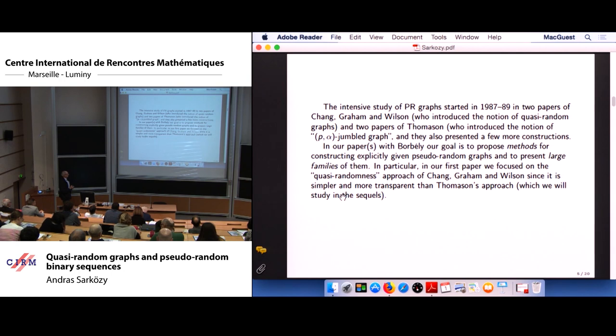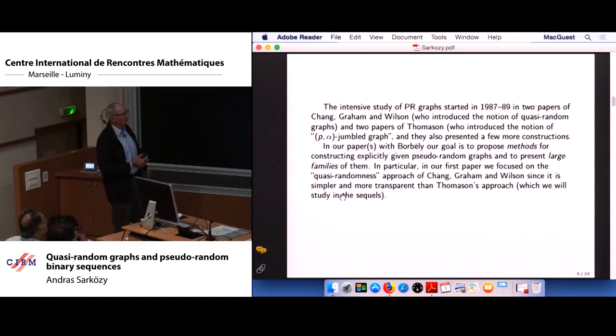Actually, I think Thomason's paper, first paper appeared a little earlier than Chung, Graham, and Wilson. And anyway, I like Thomason's paper better, but the Chung, Graham, and Wilson paper, as I wrote there, is simpler and more transparent, so it is easier and more reasonable to start with that, to write the first paper on that.